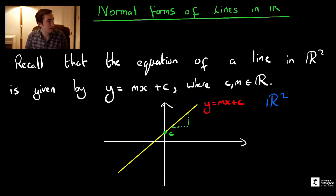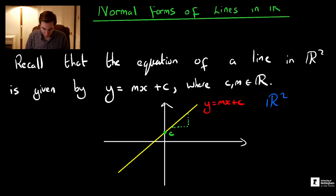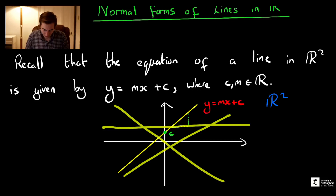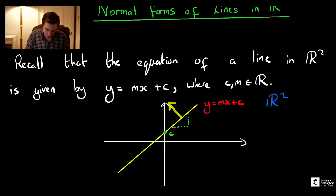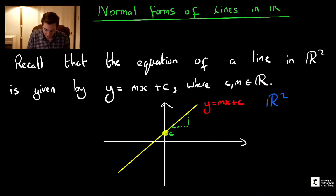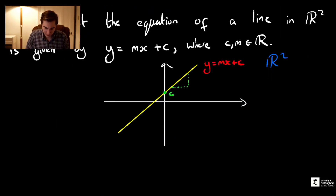There's another way to think about this: we can describe a line by how it is orientated in that space. A straight line is simply encoded by its orientation — it could be angled this way, horizontal, or another direction. That orientation is encoded by the vector that points normal to the surface of the line. If we know this normal vector, it tells us the orientation, and the only other thing we need to know is which point it intersects on the y-axis.